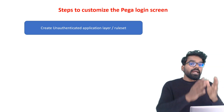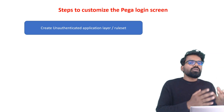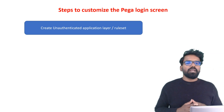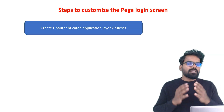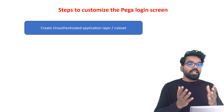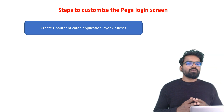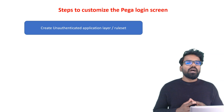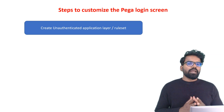You can also create an application layer and have the rules in the rulesets that are part of that application. In this video, I'm going to create an application layer. Alternatively, you can also use a production ruleset — I have explained that in my blog article and provided a link below this video.